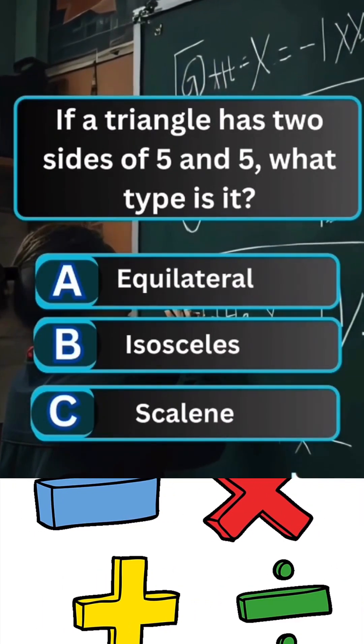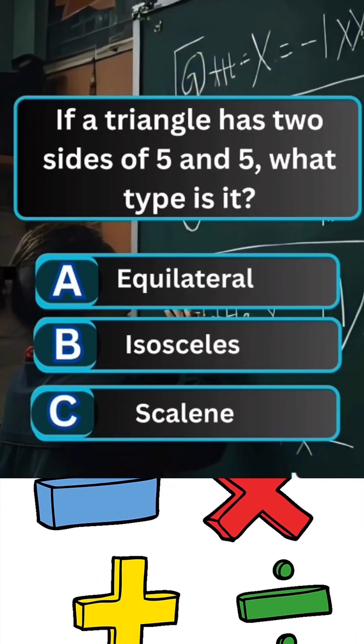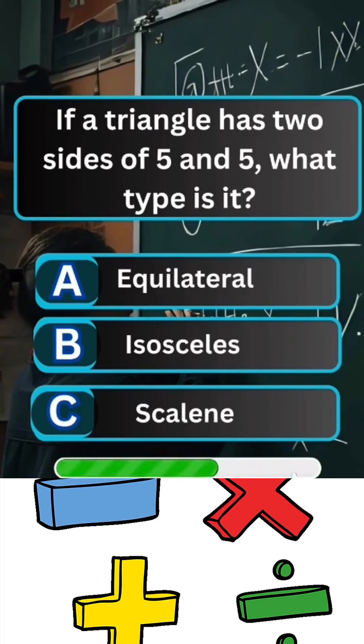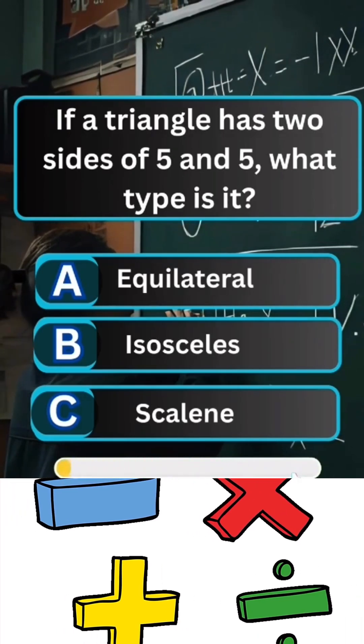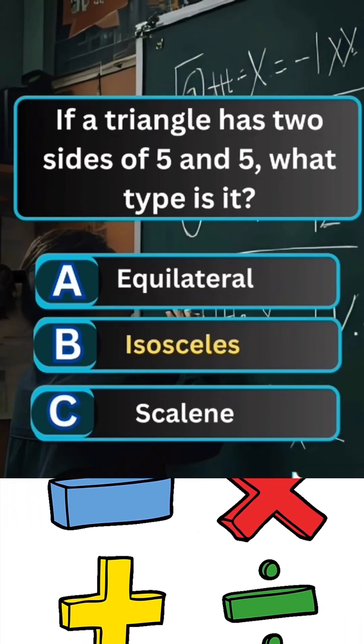Question 2. If a triangle has two sides of 5 and 5, what type is it? Answer B. Isosceles.